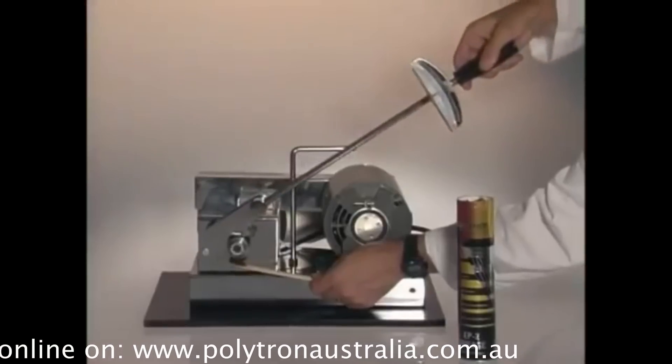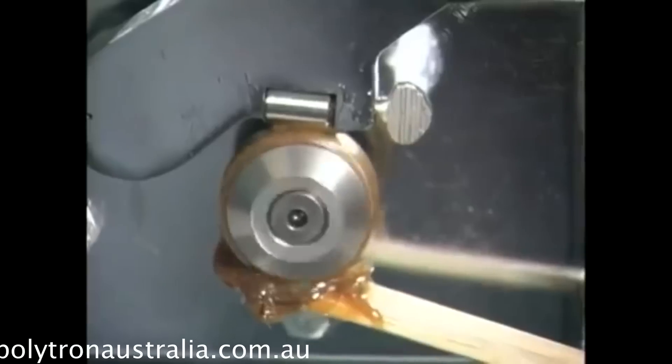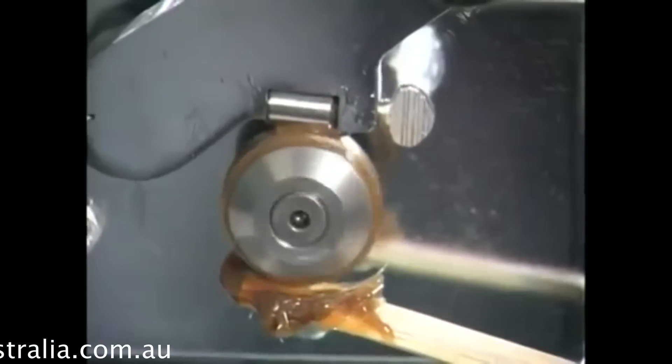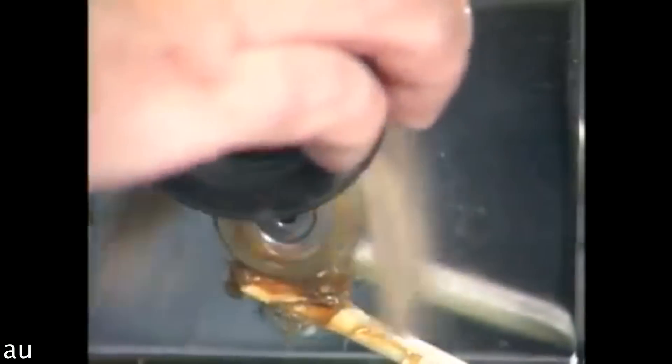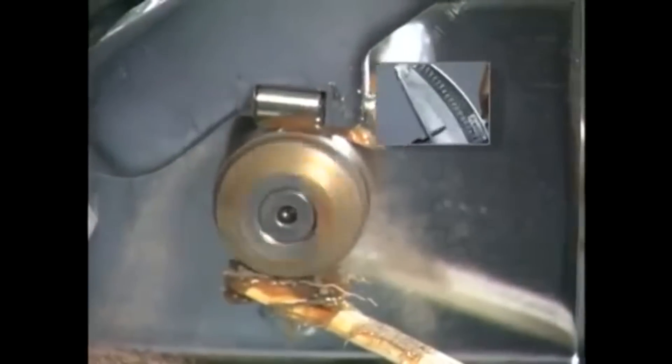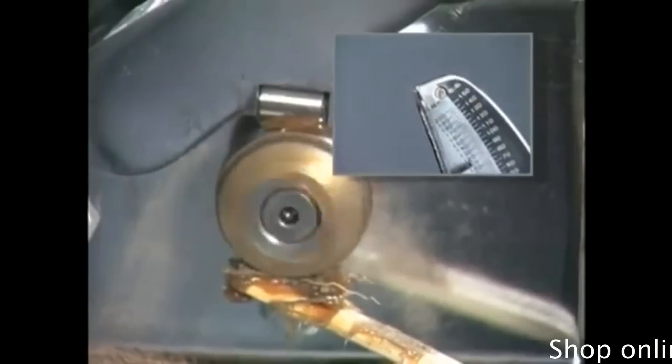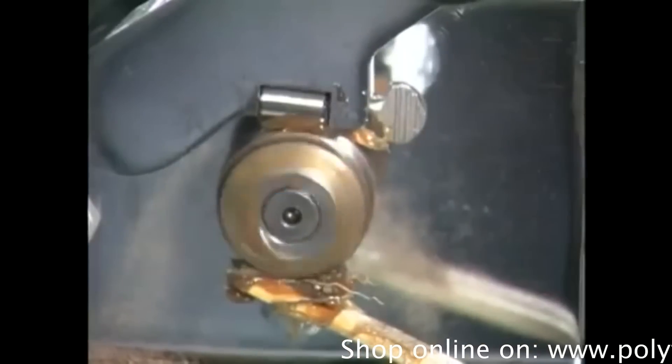Now, we'll test Polytron grease. Polytron continues to properly lubricate the bearing, even after adding dirt, sand, and water. This is due to Polytron's ability to molecularly bond to the bearing, forming a protective coating.